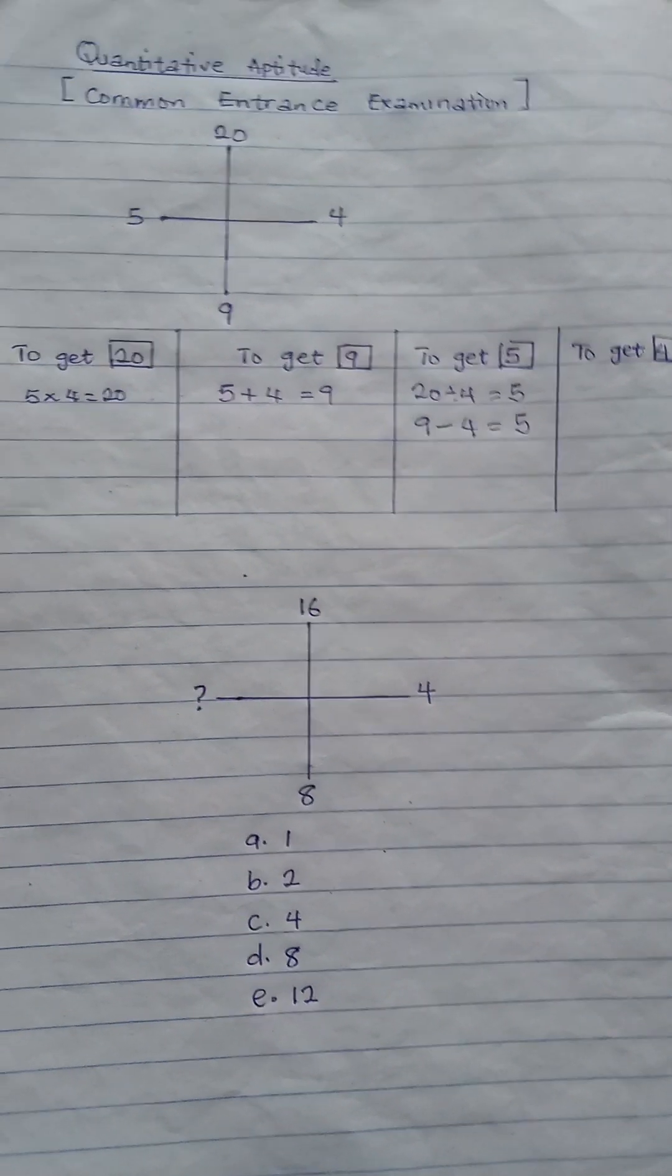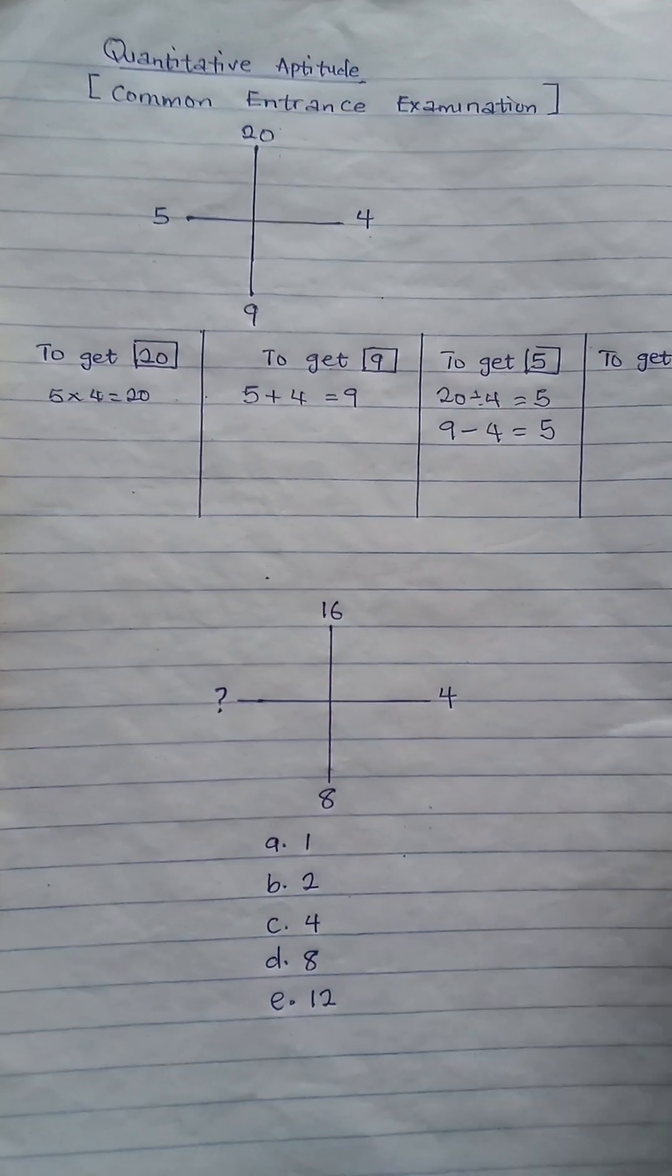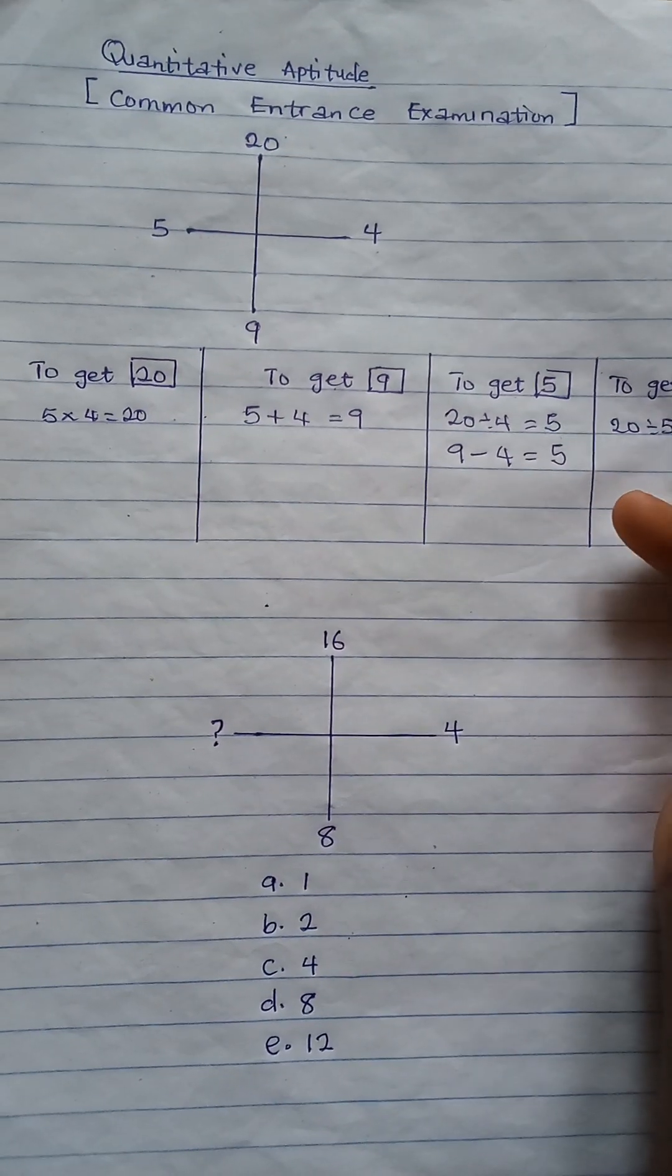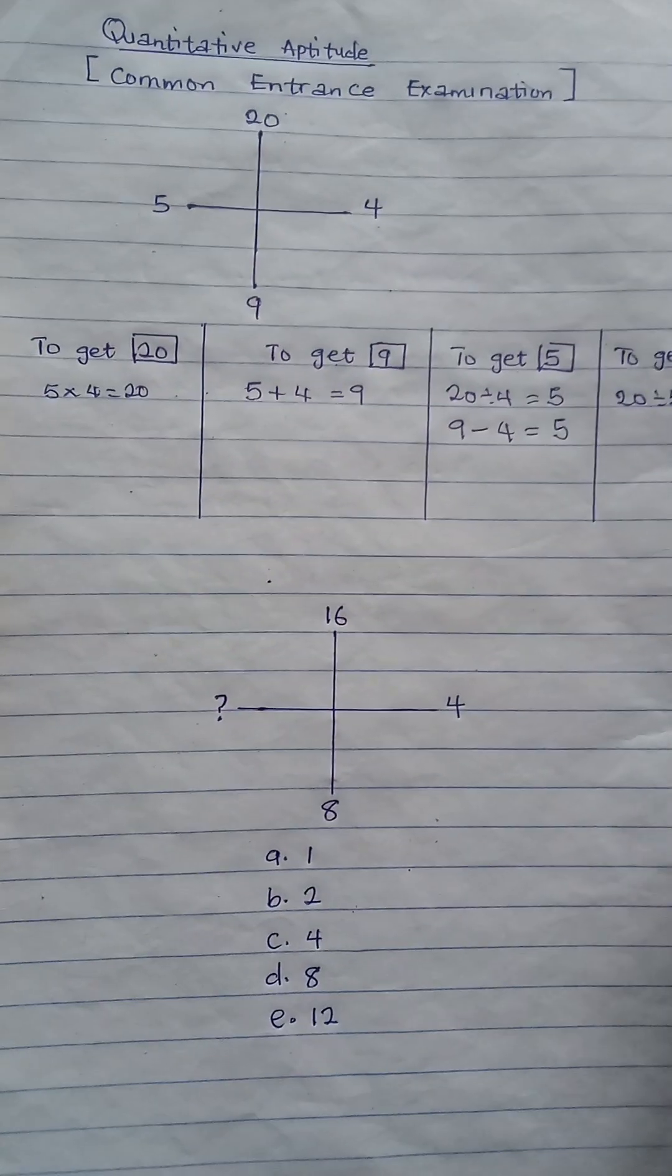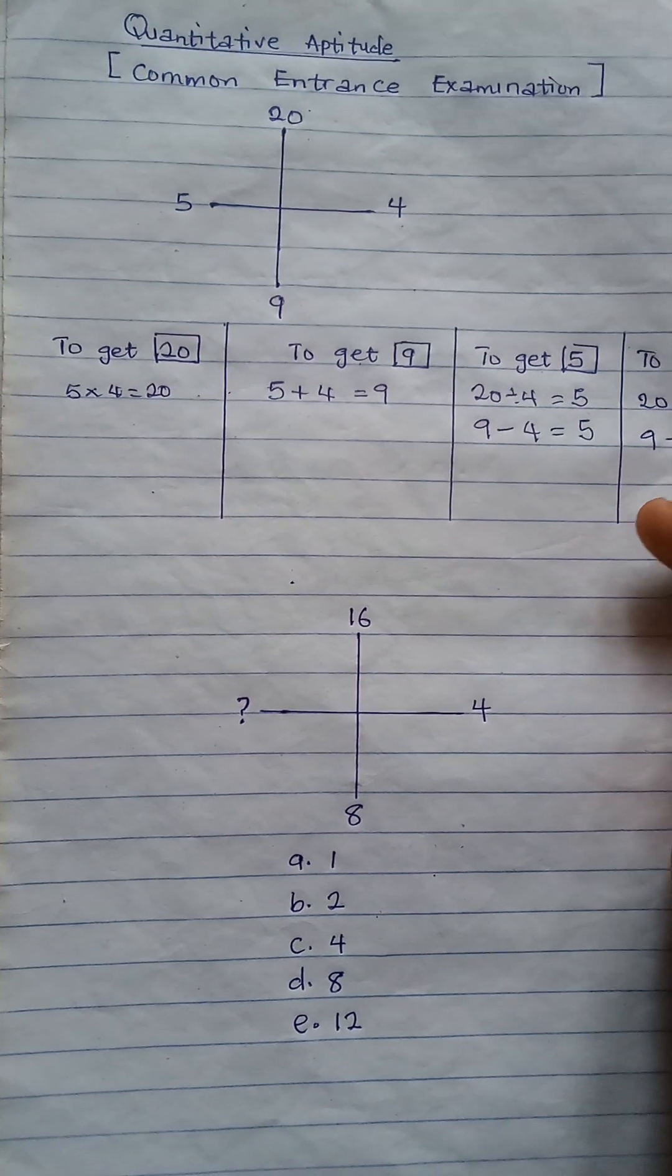The same thing goes for 4. How do I get 4? I can simply say 20 divided by 5, and that will give me 4. And I can also say 9 minus 5, and that will give me 4.